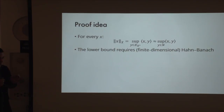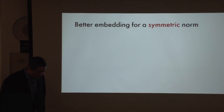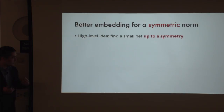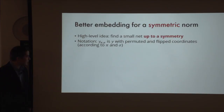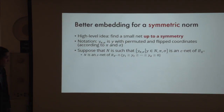Now let's sharpen this for symmetric norms. Instead of an epsilon-net of the full unit ball, it's enough to consider an epsilon-net up to symmetry—exploiting that our norm has enough symmetries. We consider a much smaller set that generates an epsilon-net when we apply all possible symmetries. Specifically, let Y_{π,σ} denote vector Y when we apply permutation π and flip signs according to σ. We take some small set N such that applying all symmetries to it gives an epsilon-net of the dual ball.